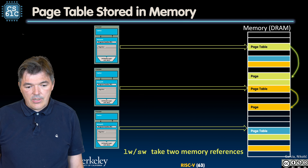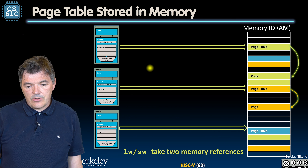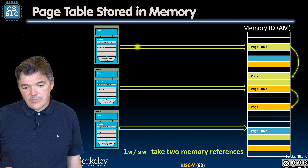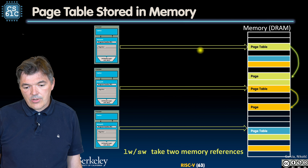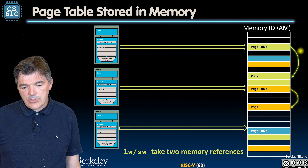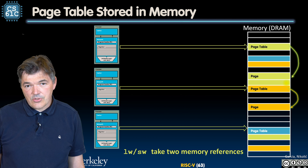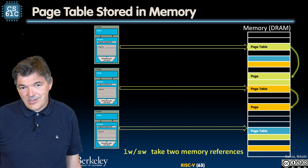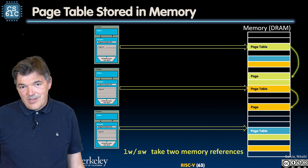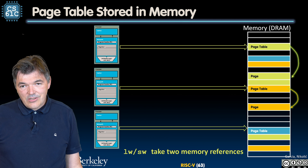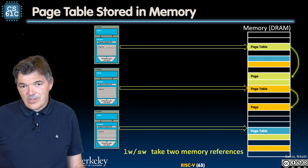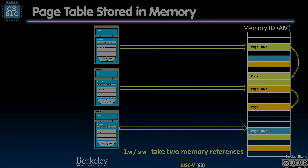In a quick summary: our page tables are stored in memory. Whenever we reference data in memory, we first reference the page table, and the page table references the actual page — and this happens for every process. We'll take a look in more detail at what else is in these page table entries after the break. See you then.